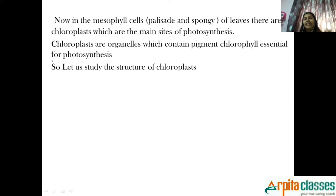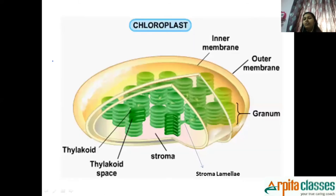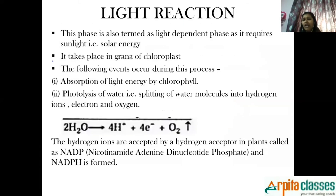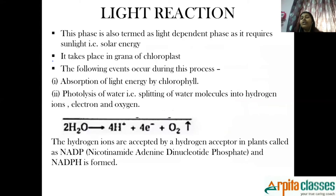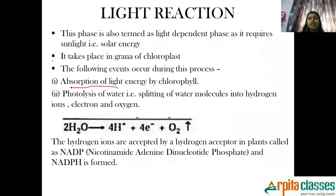So in light reaction, the first step is light energy is going to be absorbed by the chlorophyll molecule. Light energy or sunlight is basically going to be absorbed by the chlorophyll molecule. After the chlorophyll molecule absorbs the sunlight, that sunlight is going to be used for something called photolysis of water.